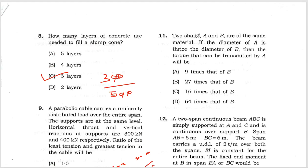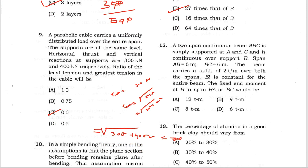Question 11: Shafts A and B are of the same material. If the diameter of A is twice the diameter of B, then the torque that can be transmitted by A will be proportional to the cube of the diameter. So with 3d whole cube, it's 27 times that of B. Option B is correct.